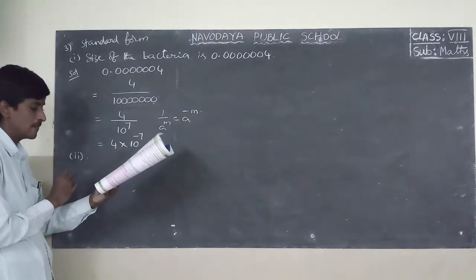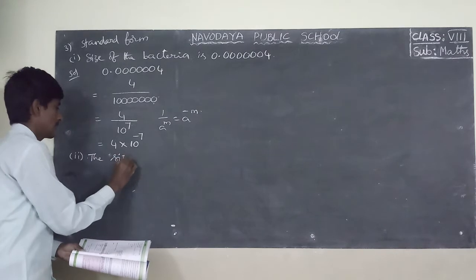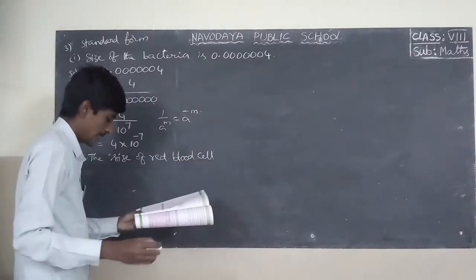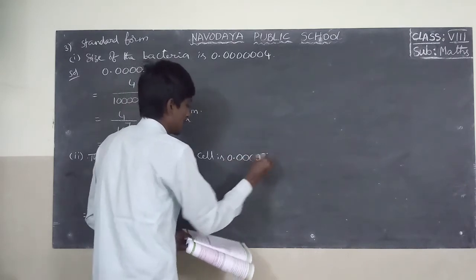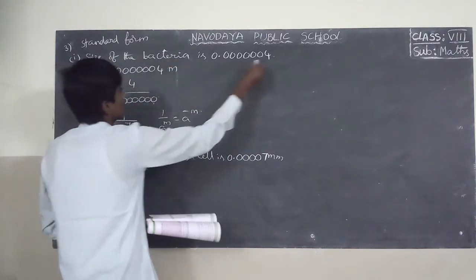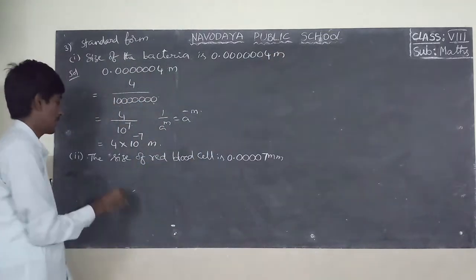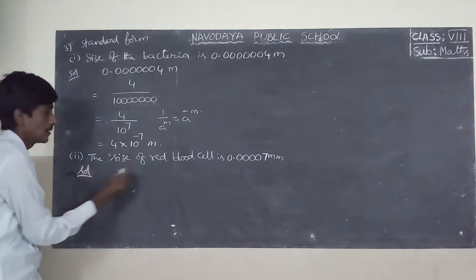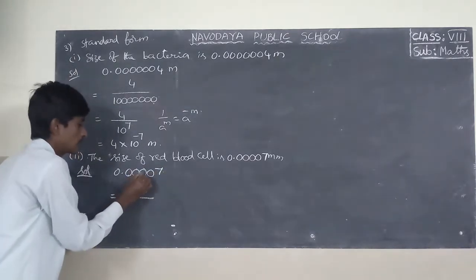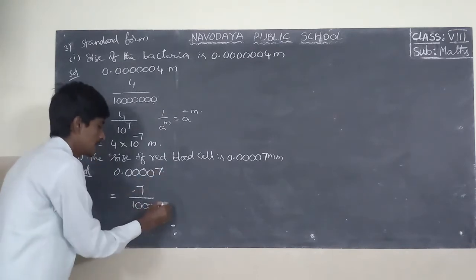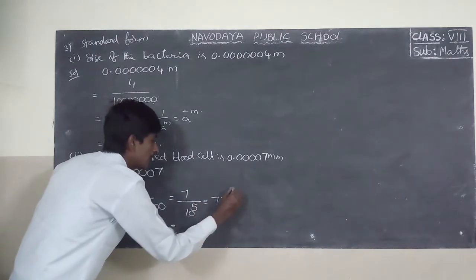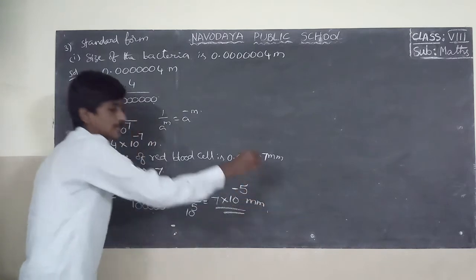Second one: the size of a red blood cell is 0.000007 millimetres. Count: 7 by 1, 2, 3, 4, 5 digits. So one after you take 5 zeros. This can be written as 7 by 10 to the power of 5, which equals 7 into 10 to the power of minus 5 millimetres.